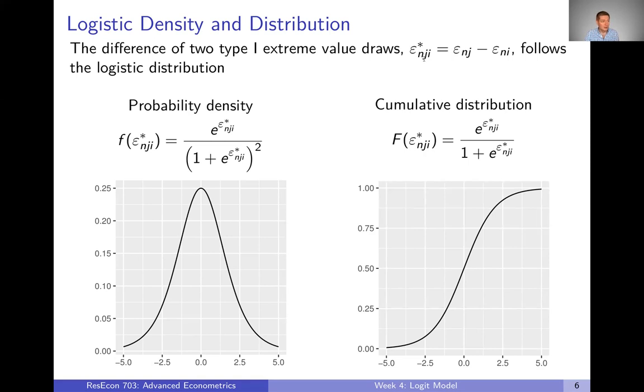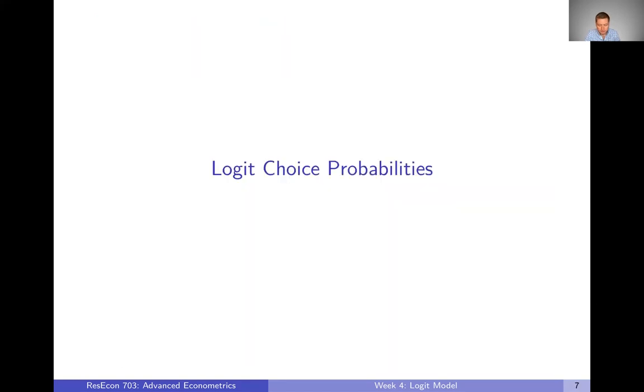And here I have, once again, the probability density and cumulative distribution of the logistic distribution. You can see these look more symmetric. The probability density is symmetric, looks kind of like a normal or a t or something that we're used to, same with the cumulative distribution. And the actual mathematical expressions for them are here also. So that's the assumption we're making about the logit model. I'll stop there. And in the next video, we're going to talk about what this assumption means for choice probabilities.